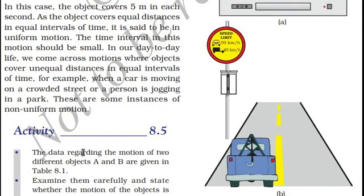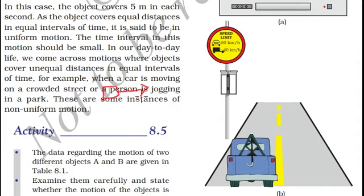In our day-to-day life, we see some objects cover unequal distances in equal intervals of time. For instance, a car moving in a crowded street — when you are stuck in traffic, an automobile may be at rest at some point, then starts to move, and if there is more crowd, it slows down again. This is non-uniform movement, and this type of motion is called non-uniform motion.